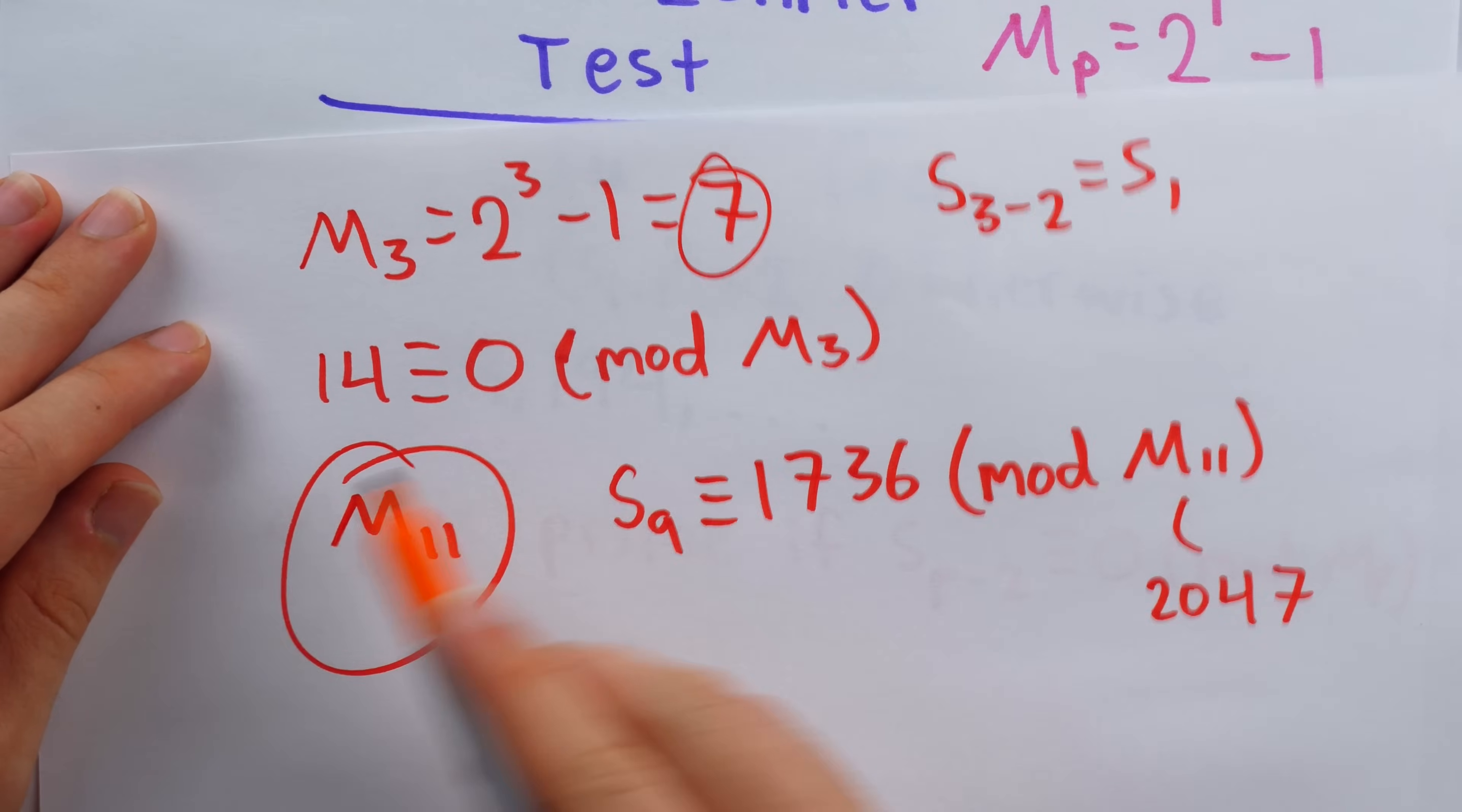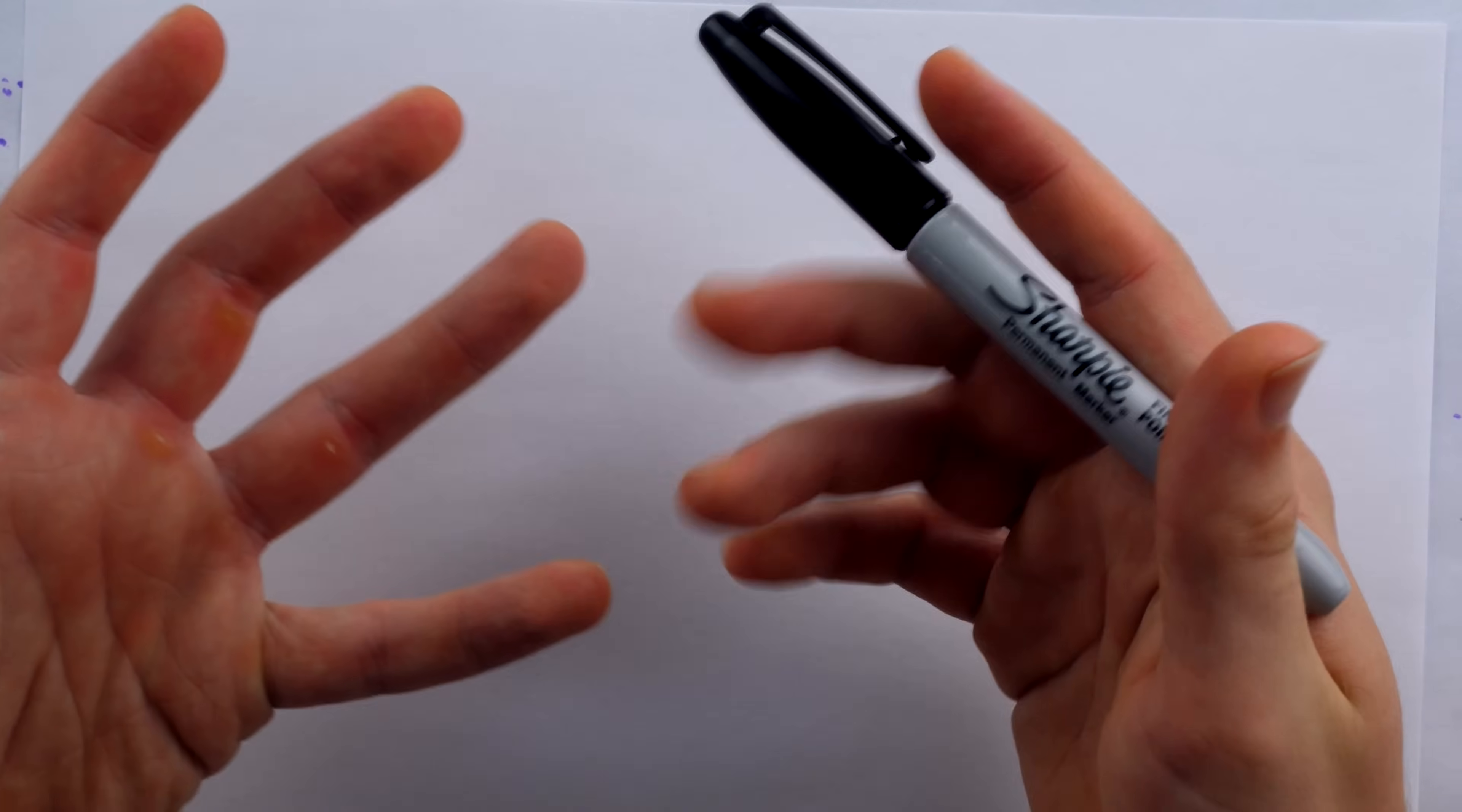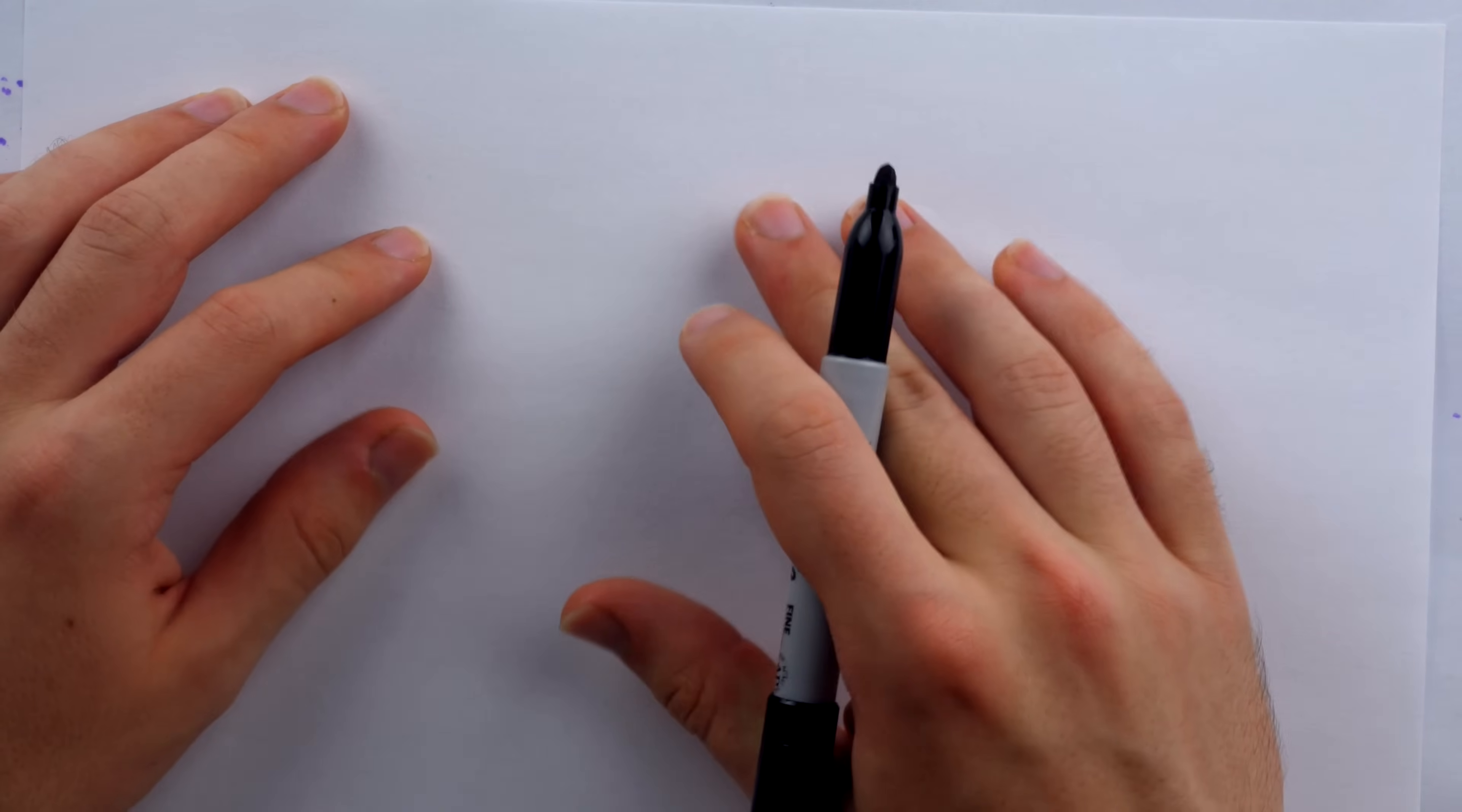This means that the ninth term of the sequence is not a multiple of M_11, which happens to be 2047. And so by the Lucas-Lehmer test, we would have that this is not a prime number, but that's how they did it. First, the Fermat primality test found that this new number was probably prime.